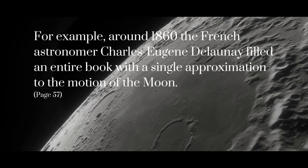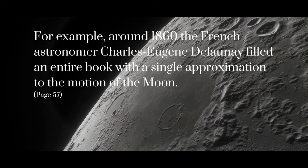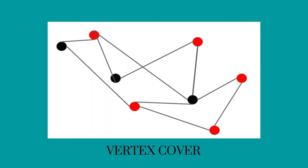Newton and his successors were unable to find exact solutions for a system of three or more bodies, such as the Moon, Earth, Sun, and the entire solar system. Instead, they tried to devise methods to calculate approximate numbers. For example, around 1860, the French astronomer Charles-Eugène Delaney filled an entire book with a single approximation to the motion of the Moon, as influenced by the gravitational attractions of the Earth and the Sun. Other problems that have approximate algorithms are vertex cover, traveling salesman, set cover, and shortest superstring.